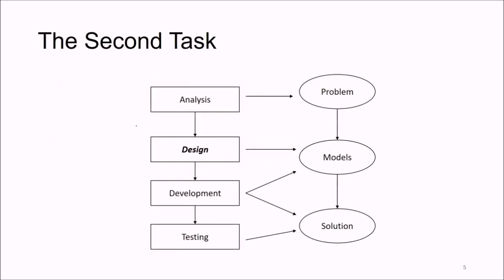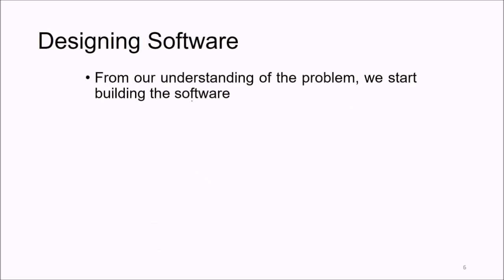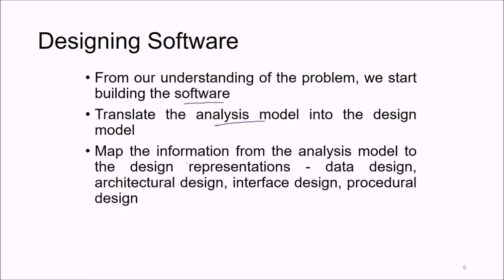For any problem, you first do some analysis, then you design and make models, then you develop with respect to those models. The development produces a solution, and then that solution is tested. From our understanding of the problem, we start building the software. We translate the analysis model into the design model, mapping information from the analysis model to the design representation. First we make the data design, then we go for architectural design, interface design, and procedural design.